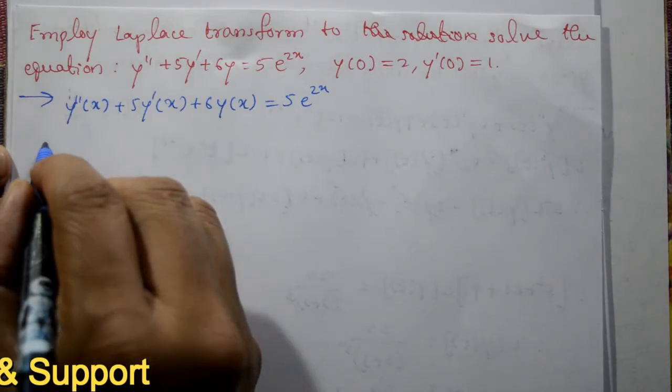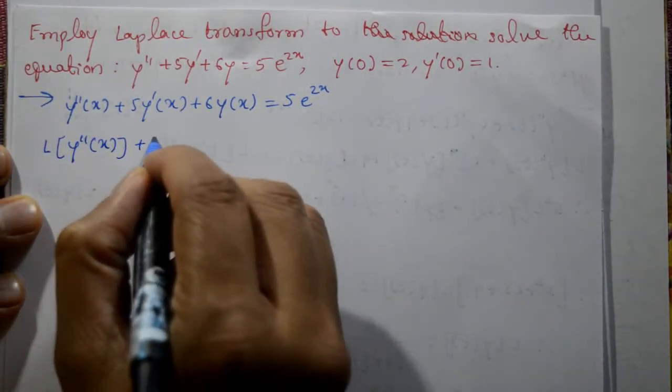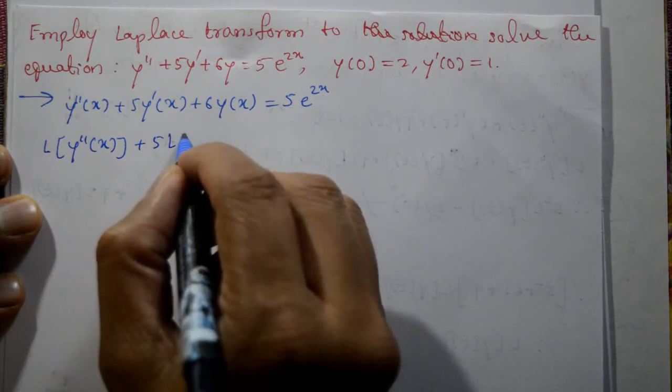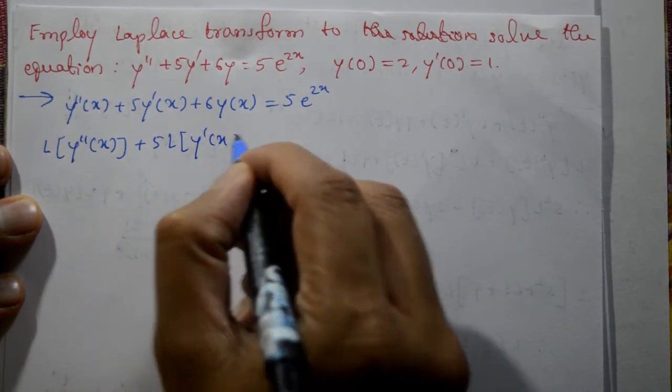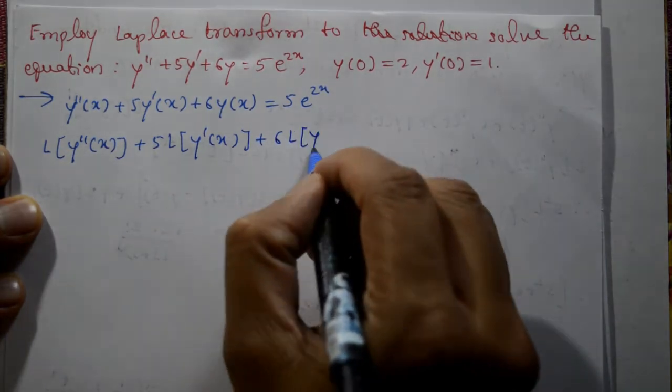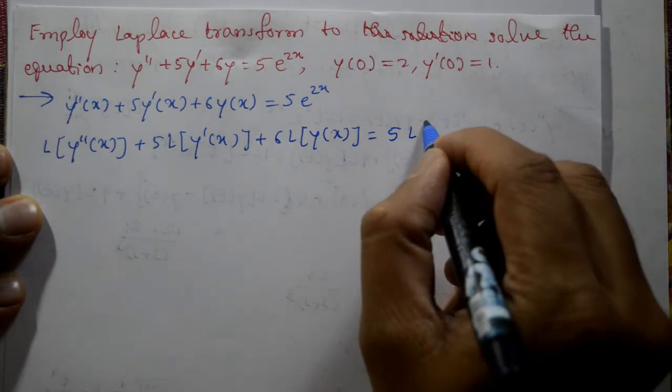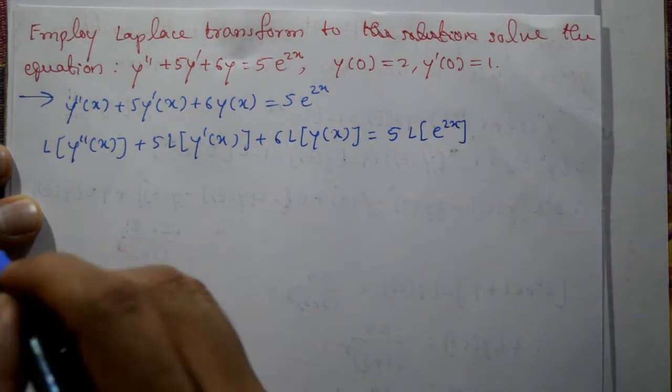On both sides you can apply Laplace transform. So Laplace of y double dash of x plus 5 into Laplace of y dash of x plus 6 Laplace of y of x equal to 5 Laplace of e raise to 2x.